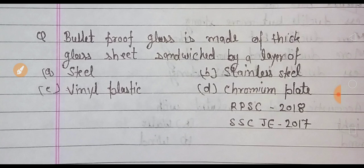Bullet proof glass is made of thick glass and? Options: steel, stainless steel, option C vinyl plastic, option D chromium plate. RPSC 2018, SSC JE 2017.